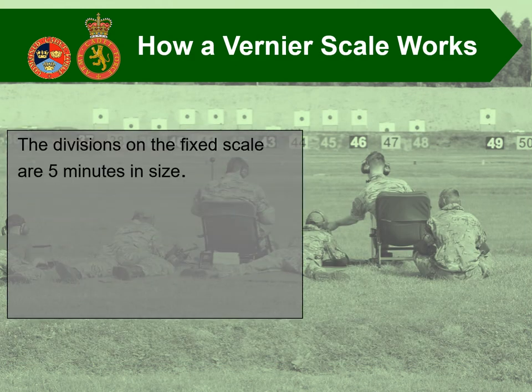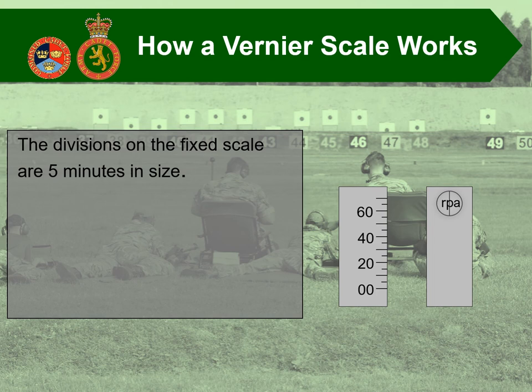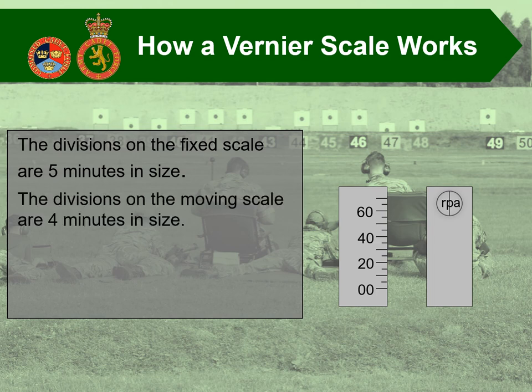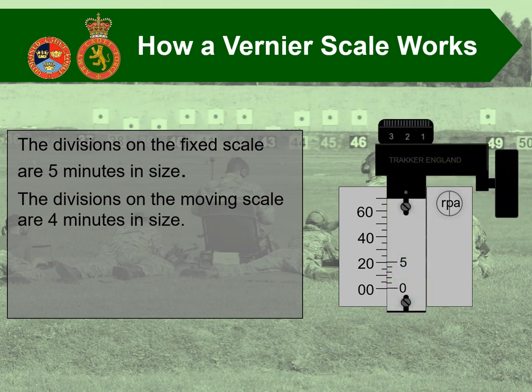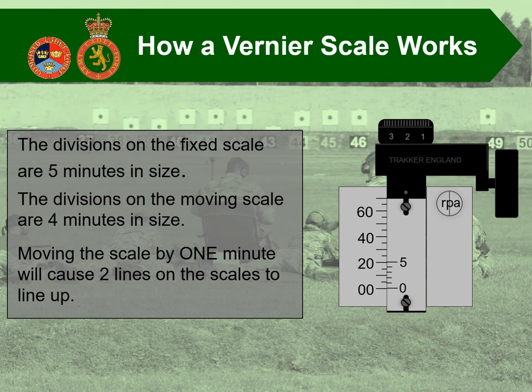The divisions on the fixed scale of the elevation vernier are 5 minutes in size. As you can see on the illustration to the right of the screen, starting at 0, the small graduation represents 5 minutes, the larger graduation represents 10, and then value markers every 20 minutes — so 20, 40, and 60. The divisions on the moving scale are 4 minutes in size and are mounted to the main sight itself. Moving the scale by 1 minute will cause two lines on the scale to line up. So where 0 and 0 line up together, the elevation at this stage is at 0.